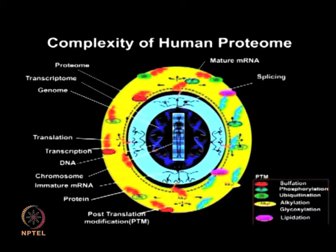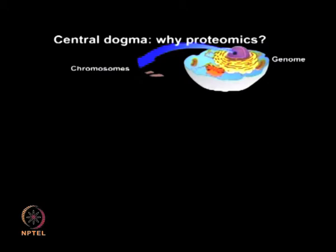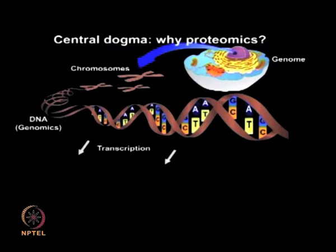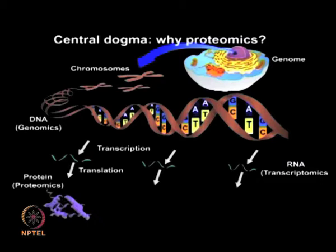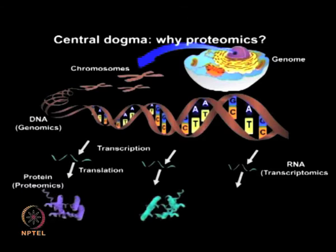The genome of an organism is mostly static, whereas the proteome is dynamic and changes with environment and time, thereby elevating its complexity level. Gene regulation is controlled by several post-transcriptional and post-translational modifications, due to which the number of proteins expressed in a cell is much greater than its genomic counterpart. Proteomics aims to decipher the structure and function of all proteins in a given cell under specific conditions, with study at the DNA level known as genomics, RNA level as transcriptomics, and protein level as proteomics.